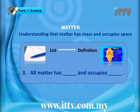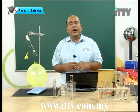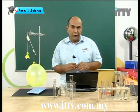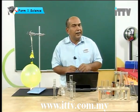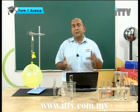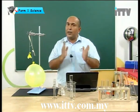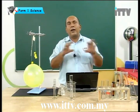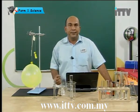Next, complete the sentence: all matter has blank, and occupies blank. Remember this comes from the experiments we did, where we proved that all matter has mass and all matter has a volume — or you can say occupies space. So three things: make that list, put everything into groups of solid, liquid, and gas, and then write out the sentence: all matter has mass and occupies space.